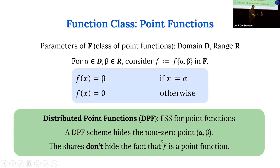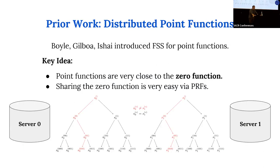The function class we'll focus on is point functions. Point functions are quite simple but powerful — they're specified by a single input-output pair alpha and beta. If the input is alpha, output beta; otherwise output zero. An FSS for point functions is called a distributed point function scheme. We're not trying to hide the fact that f is a point function; we're trying to hide which non-zero point f is specified by.